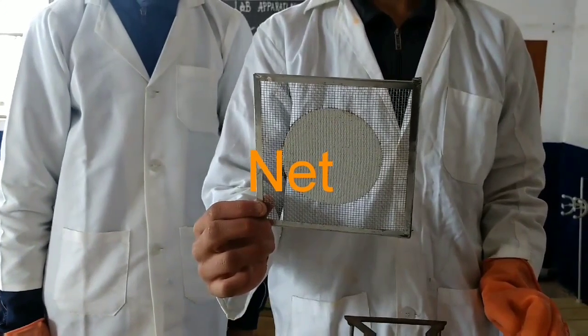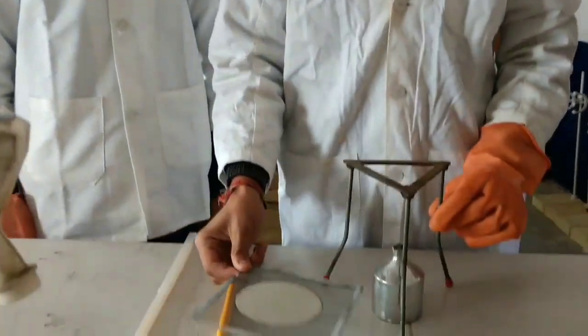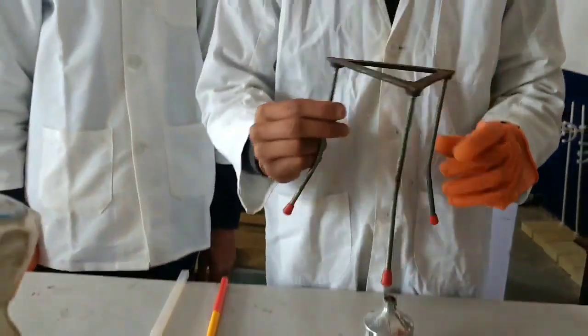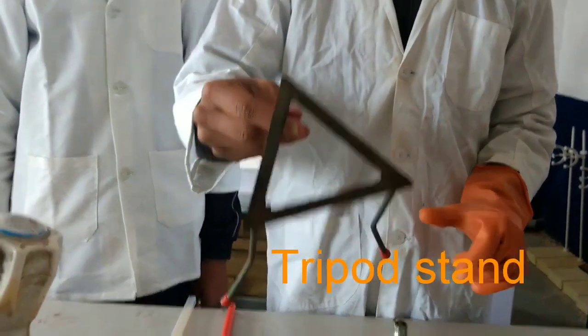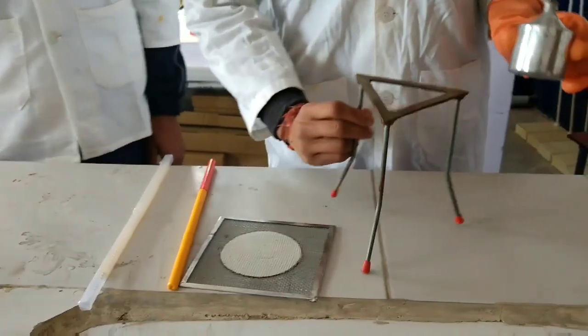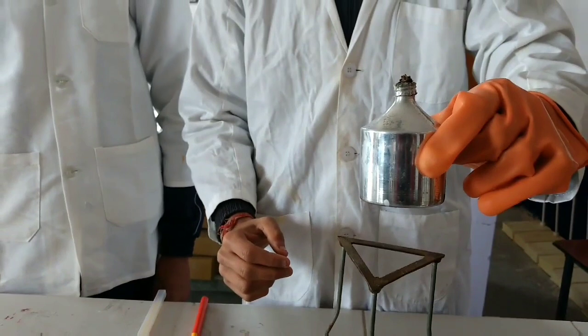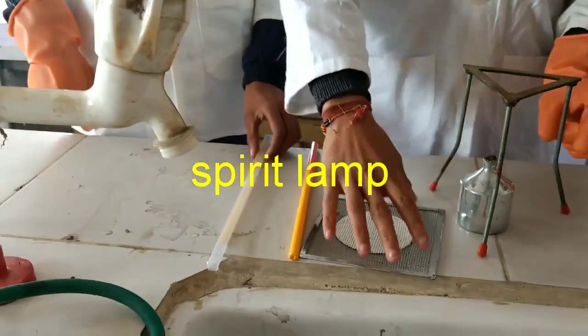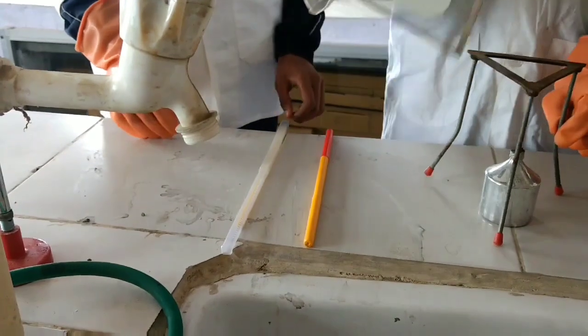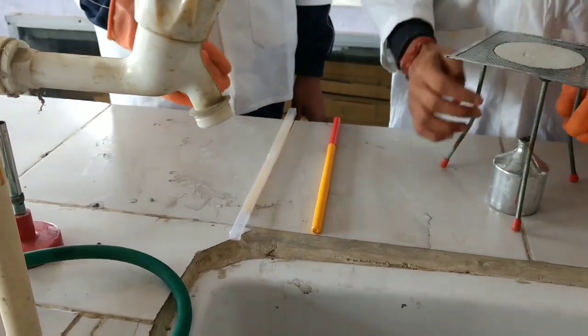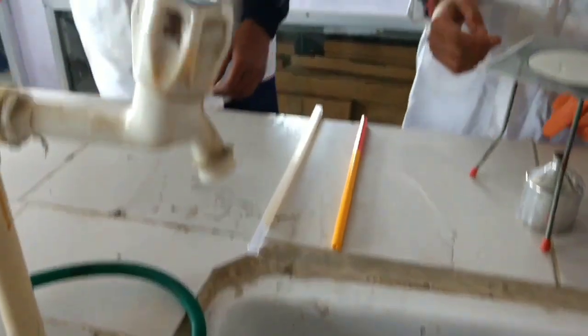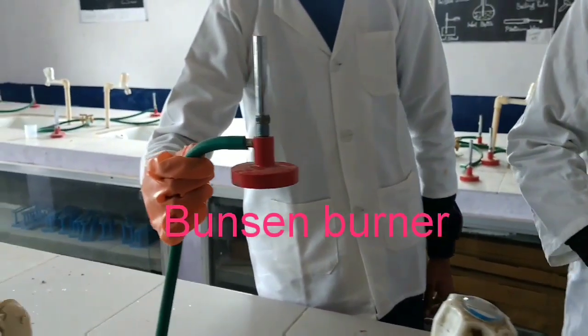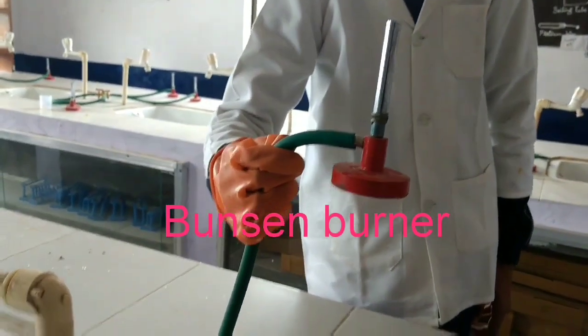So, now you can see the boiling apparatus. This is the net, tripod stand and the spirit lamp. If you are doing the boiling where less amount of heat is required, then you can use the spirit lamp or for high heating, you can use the Bunsen burner.